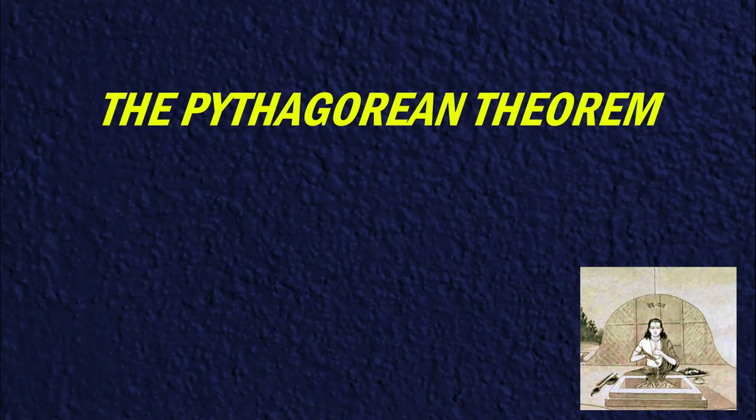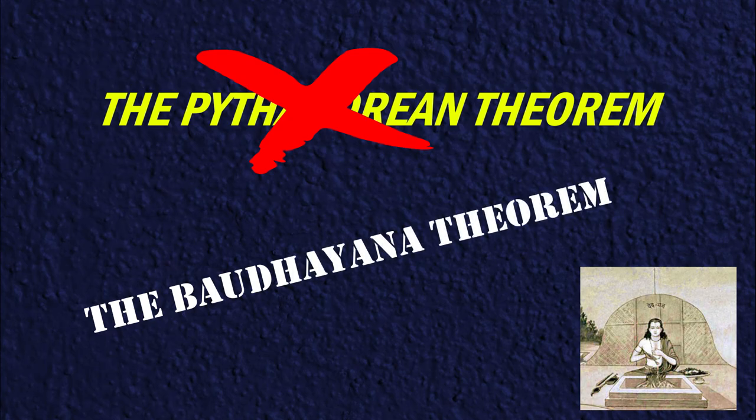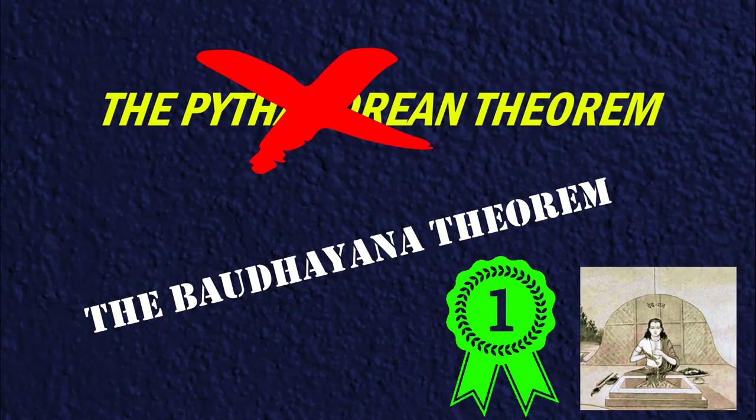Thus, would it not be more thoughtful to call the Pythagorean theorem the Baudhayana theorem? Baudhayana was the first and foremost mathematician to discover the concept. Nonetheless, how exactly did Baudhayana find this theorem?